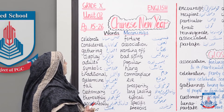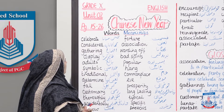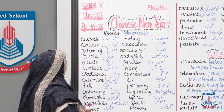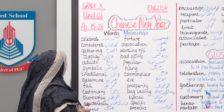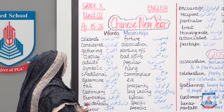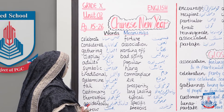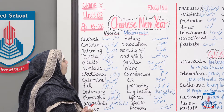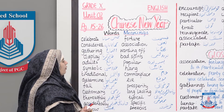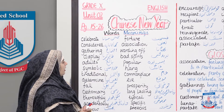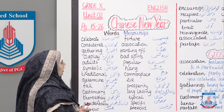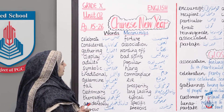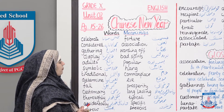Celebrate — jashn manana; considered — samjha jata hai; gathering — ijtama; displays — zahir karna; adults — baligh; symbolic — alamti; traditional — ravaiti; determine — tayyun karna; fall — gir karna; customary — rasmi; thoroughly — mukammal taur pe; accidental — haadsati taur pe; throw — phekna; fortune — kismat; association — taarluk; warding off — bhagana; bad spirits — bad-ruhen; popular — pasandida; hang — taangna; commonplace — aam; eve — mauka; prosperity — khushhali.